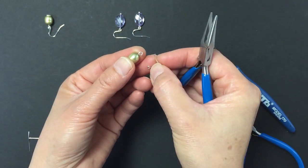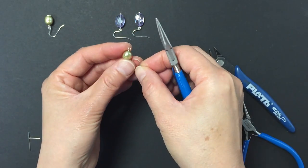To make a pair of earrings, all you will need to do is attach your wire wrapped pearl to an ear hook.